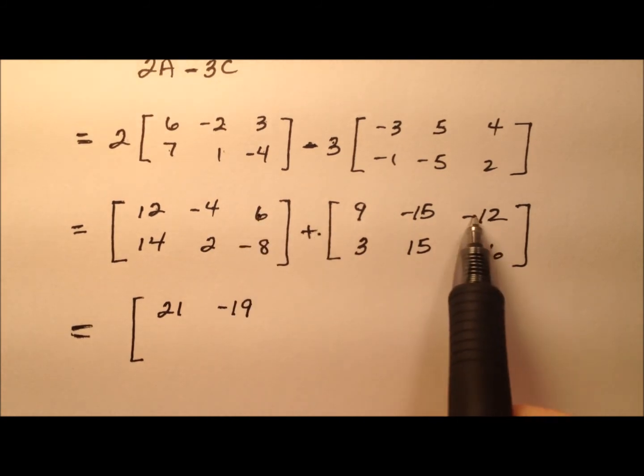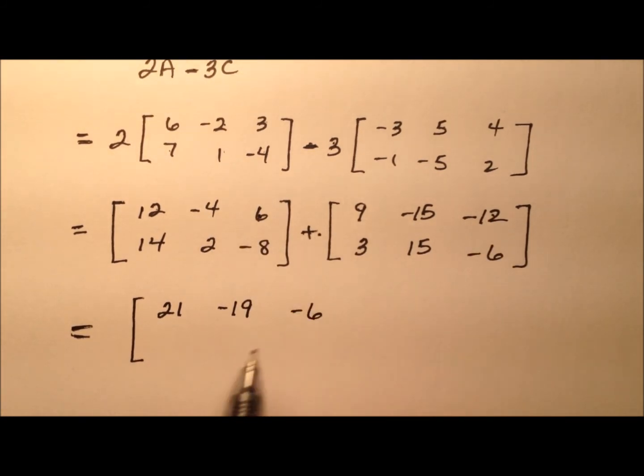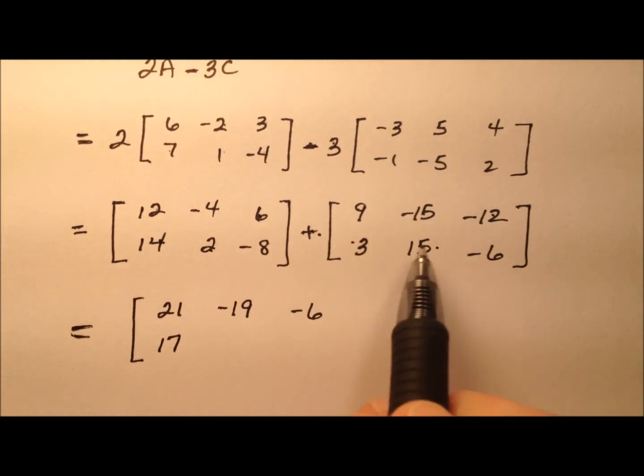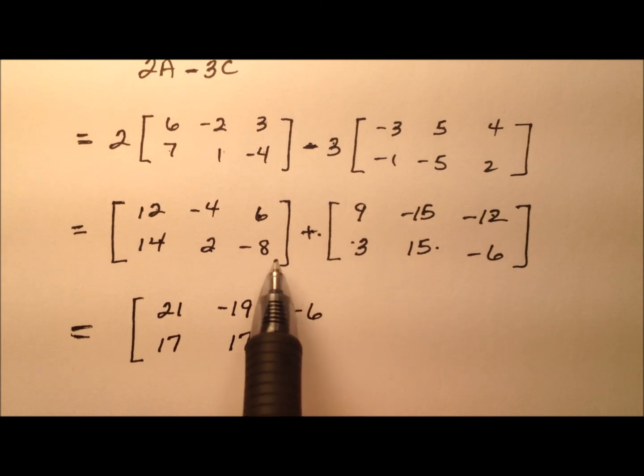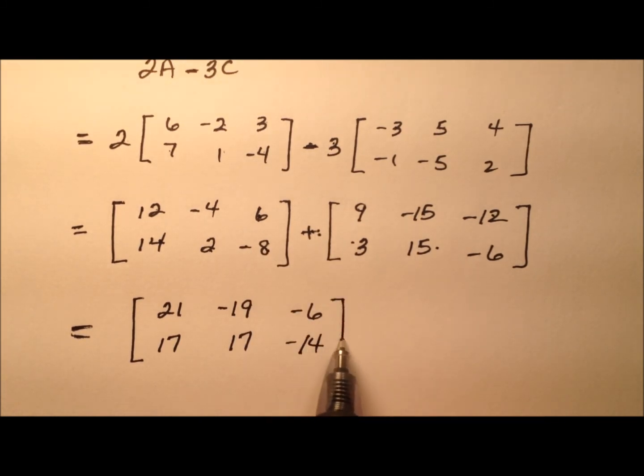The 6 plus the negative 12 will make a negative 6. The 14 plus the 3 will make a 17. 2 plus 15 will also be 17. And then we have a negative 8 plus a negative 6. That'll be a negative 14.